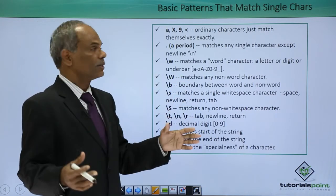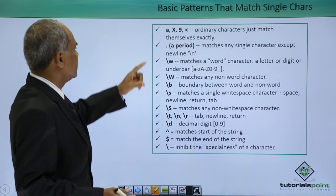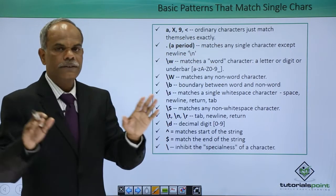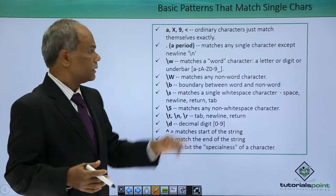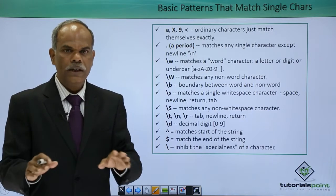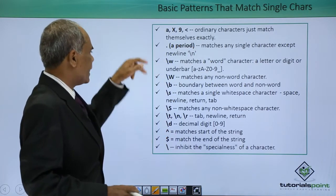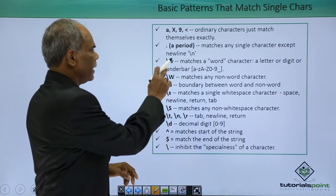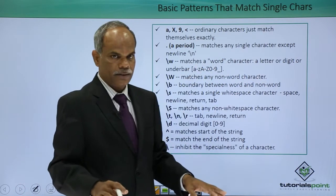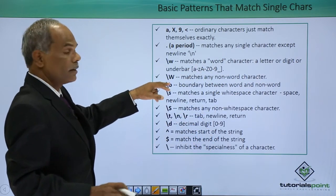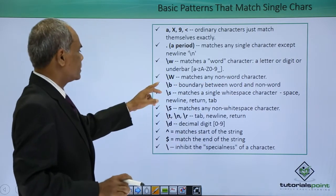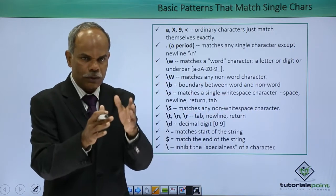These are the basic patterns to match single characters. Ordinary characters just match themselves exactly. A dot, that means a period, matches a single character except a newline — any character other than a newline can be matched using the dot. \w matches a word character — a letter, a digit, or an underscore. Capital \W matches a non-word character. \b matches the boundary between a word and non-word character.